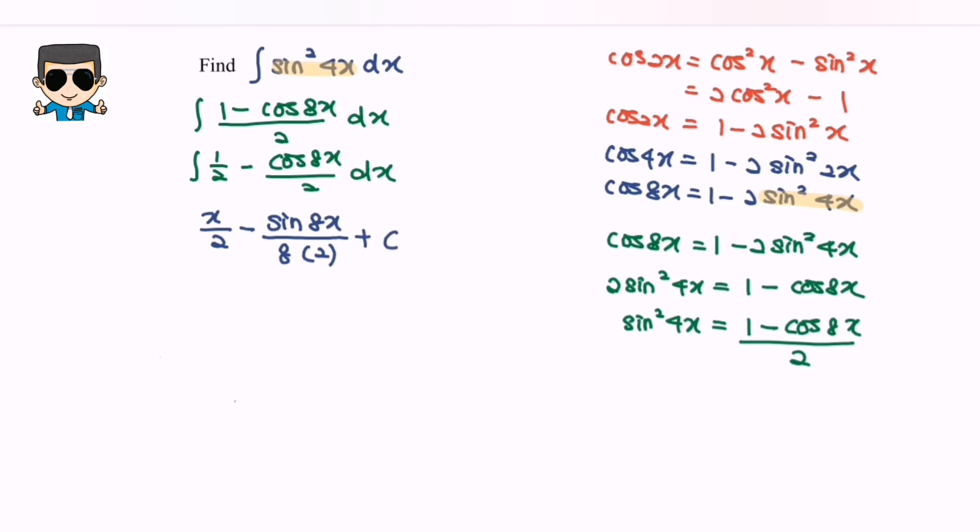Finally, we will have integrate sine square 4x with respect to x, which is equal to x over 2 minus sine 8x over 16 plus c. So here we are and thanks for watching.